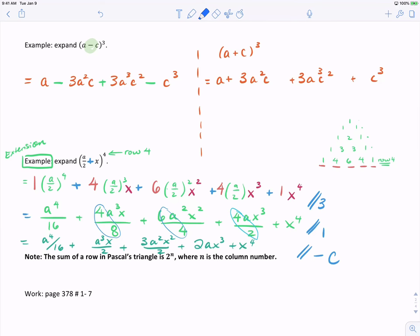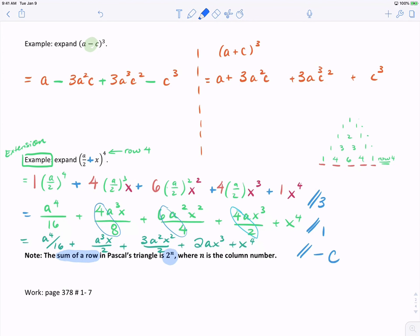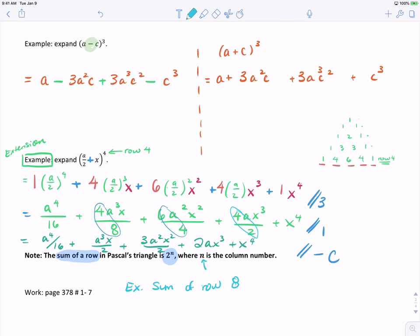One last fun fact before I leave you today is that the sum of a row, if I were to add up all the terms in a row, is 2 to the n where n is my column number. So for example, what is the sum of row 8? If I were to add up all the terms in row 8, it is 2 to the power of 8. So there's our little fun fact for today. Take a second if you need to go back through anything today, and if not, you're starting your work in your textbook page 378, 1 to 7. Thanks for listening guys.